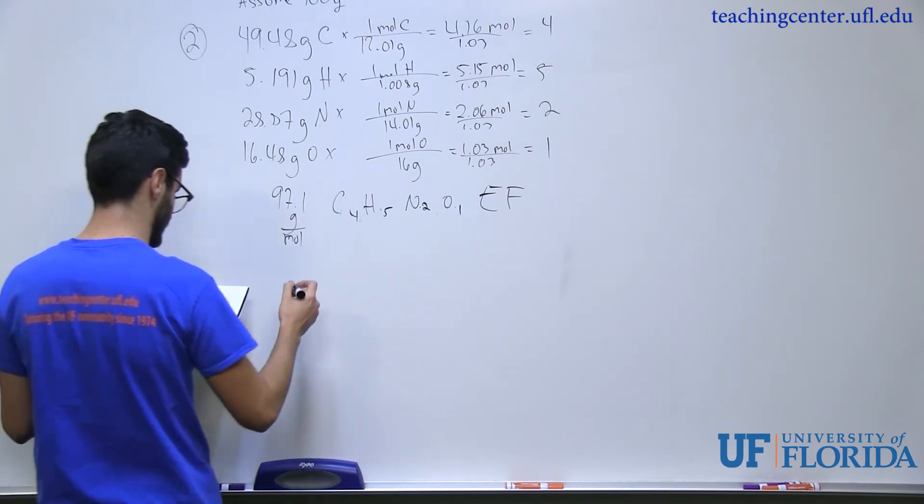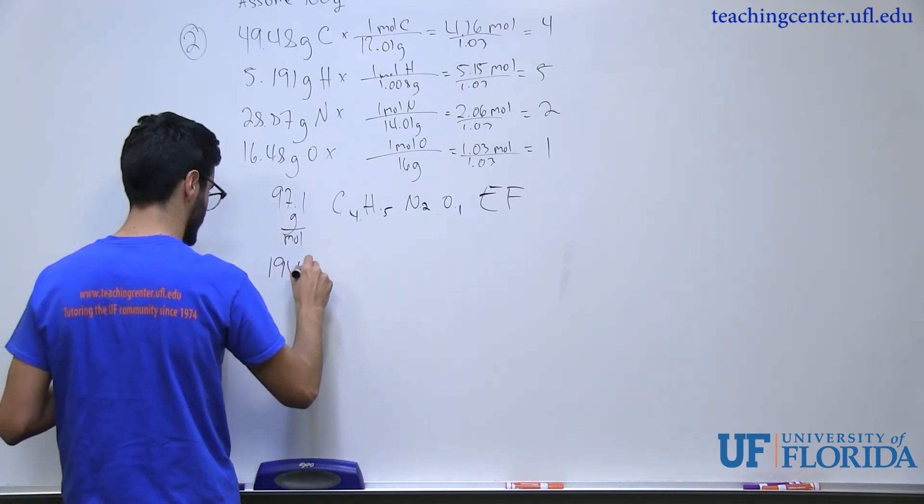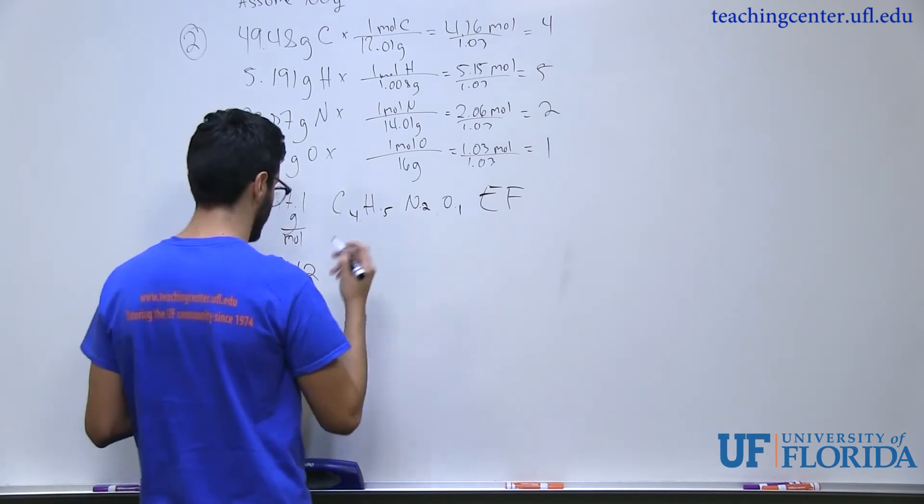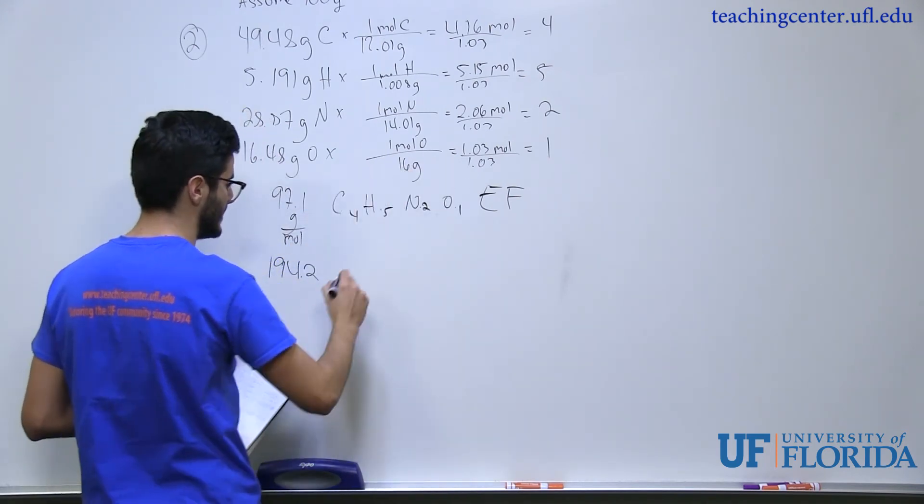If I multiply this number times 2, I'll get 194.2, which lies between that value. So that's the number we're looking for. So really, our answer should have been everybody multiplied times 2.